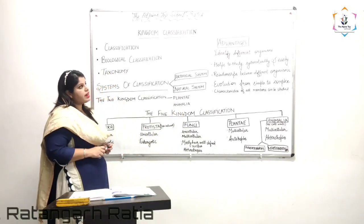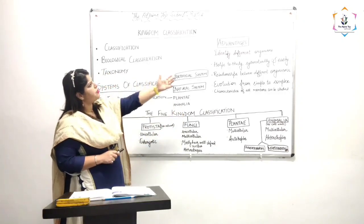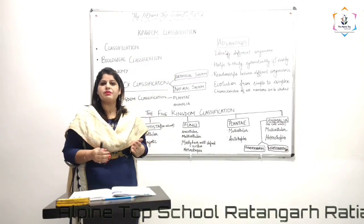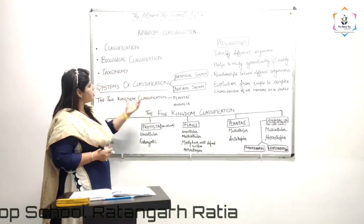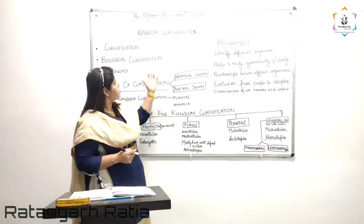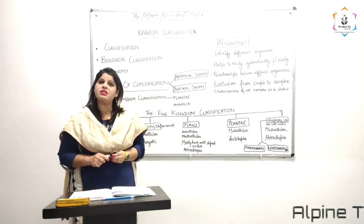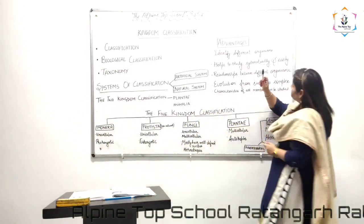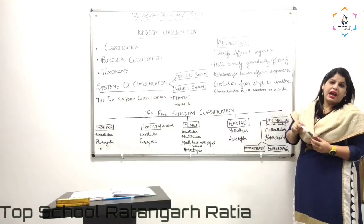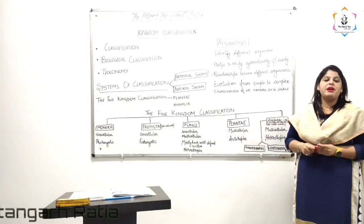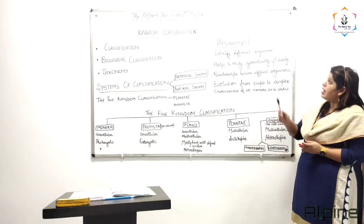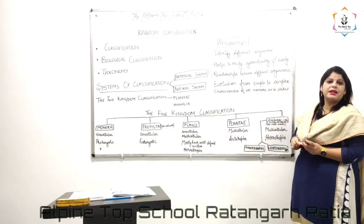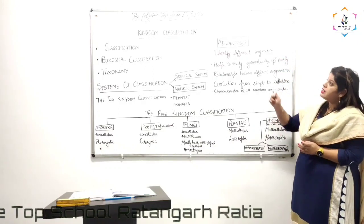Now a question arises in our mind: what are the advantages of having this classification? Why do we have to classify the different organisms in a classified manner? The first advantage is to identify different organisms. As we know, we have a wide variety of plants and animals, and for identifying different organisms and plants, we have to classify them in a particular group.